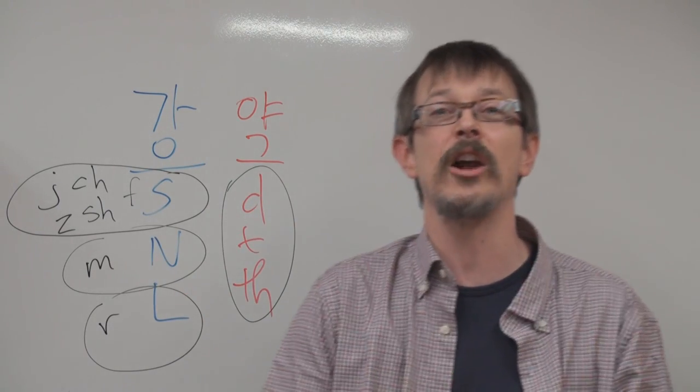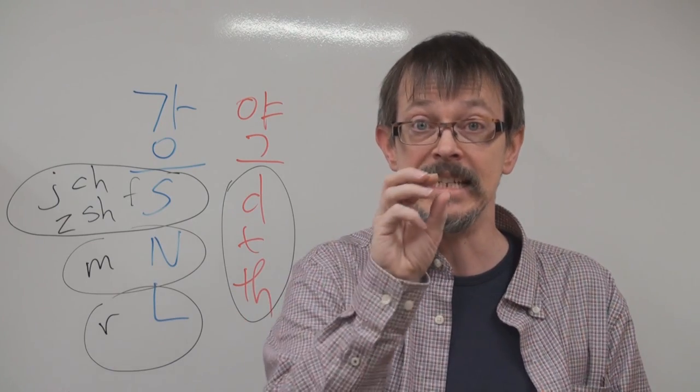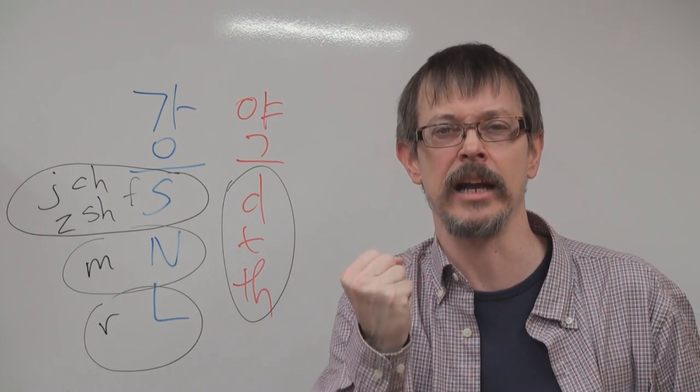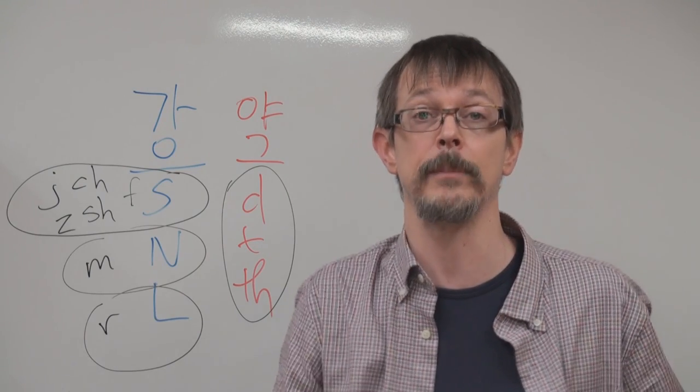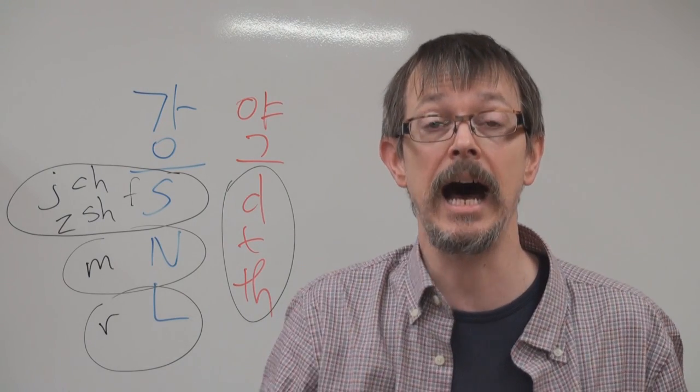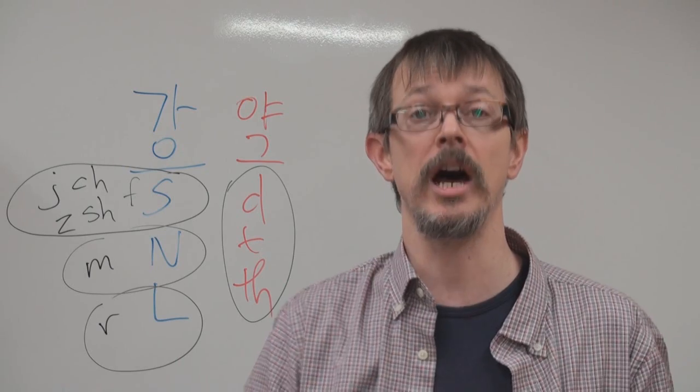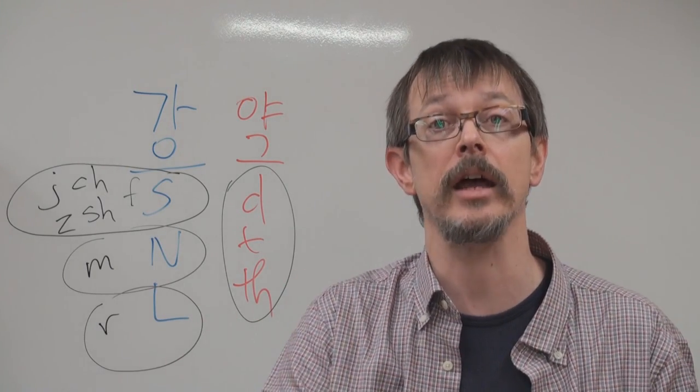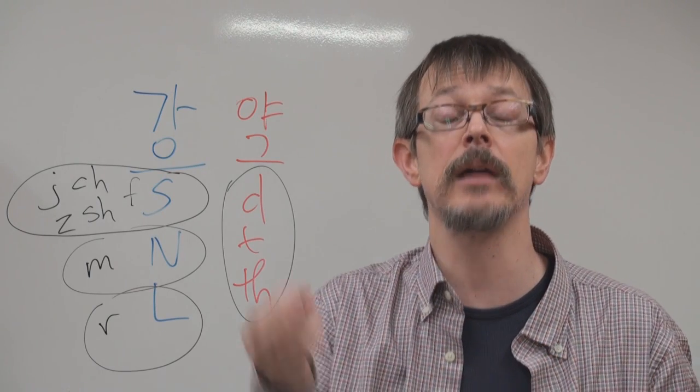특히 어떤 단어 맨 뒤에, 특히 뒤에. D하고 N 옆에 있을 때 N 때문에 N 강하잖아요. T 발음 없어요. So for example, you and I 하지 않고, you and I. Internet, 중간이잖아요. Internet 하지 않고, Internet. N 때문에 T 발음 없어요.